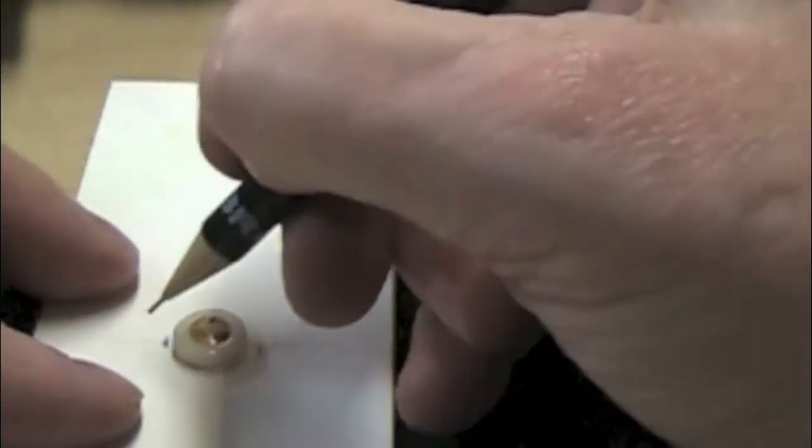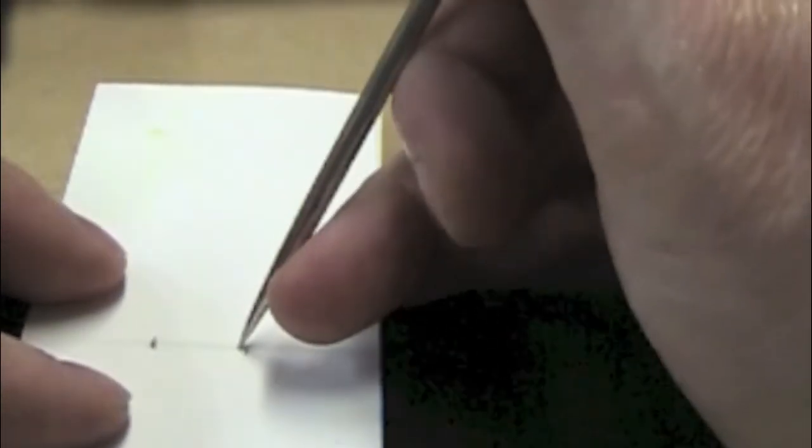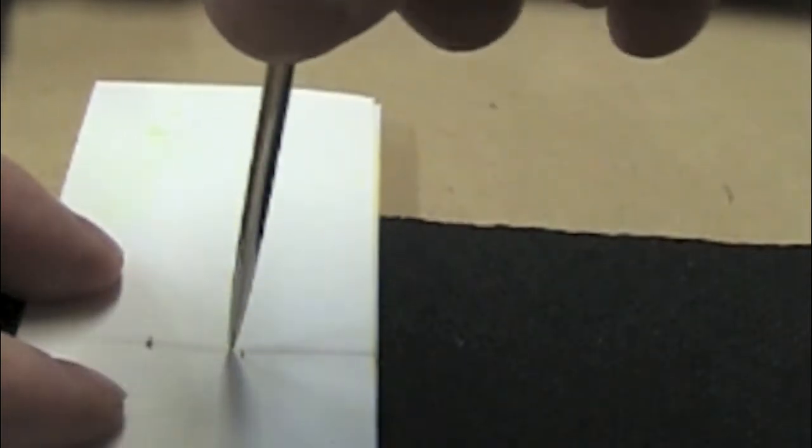Now, we're going to go in just a little bit from that first mark on the right and put a hole there. Again, I'm eyeballing all of this in terms of placement on the spine. Make sure you don't make these holes too large because you don't want the paper to rip or tear along that spine there.